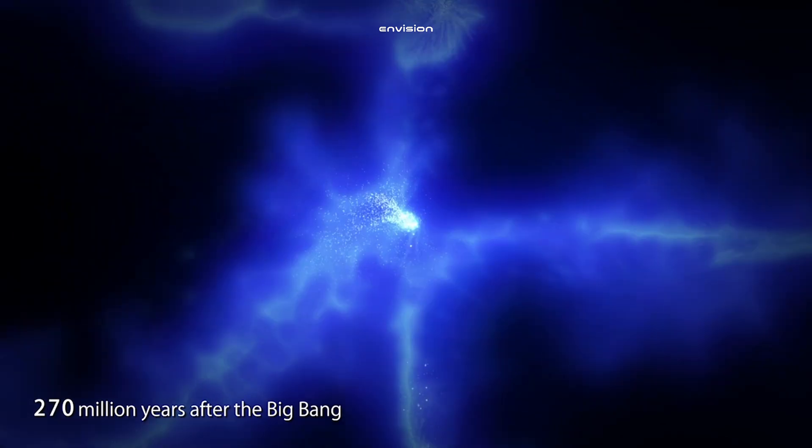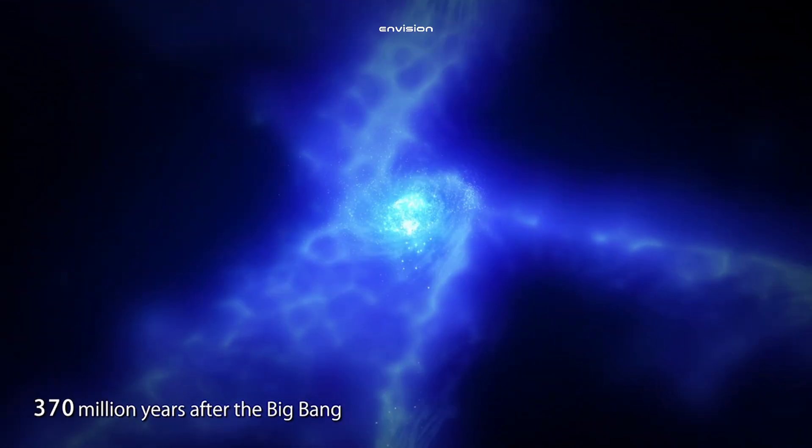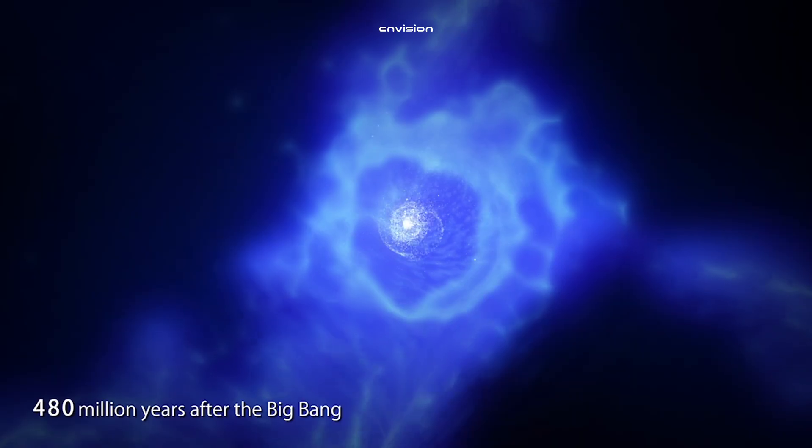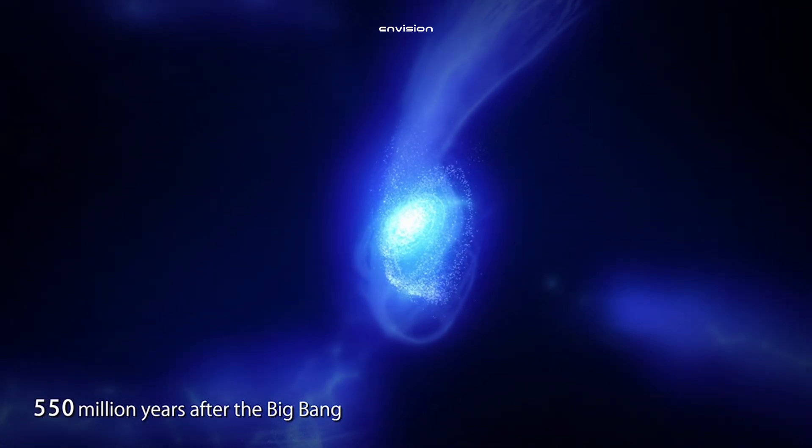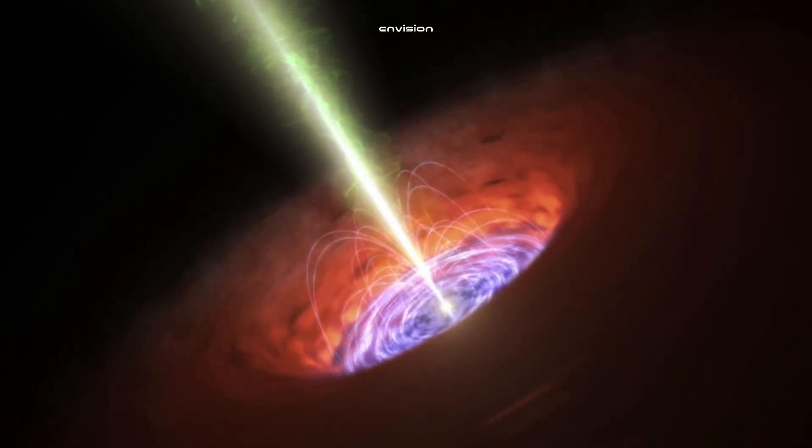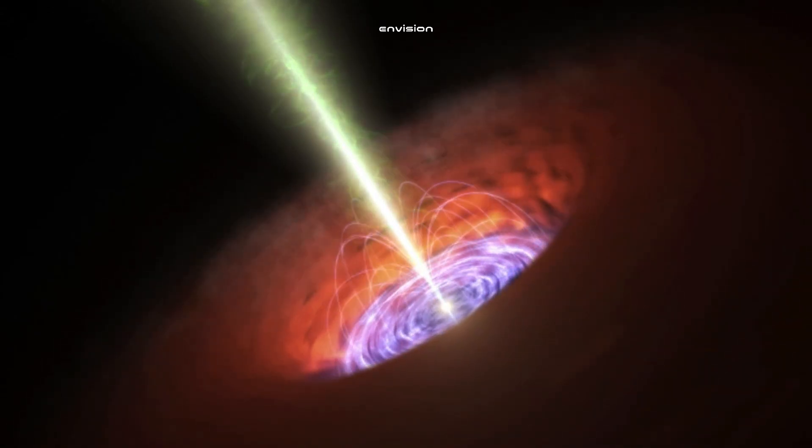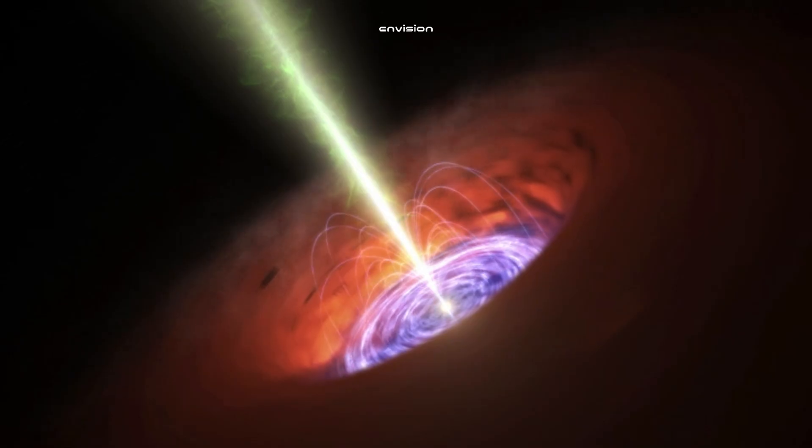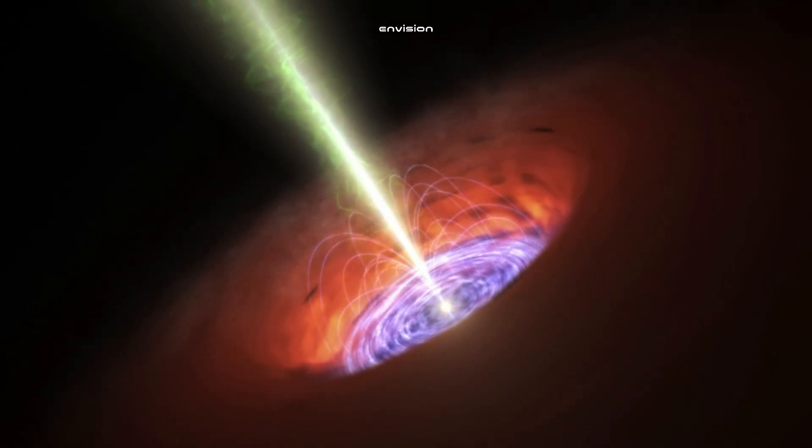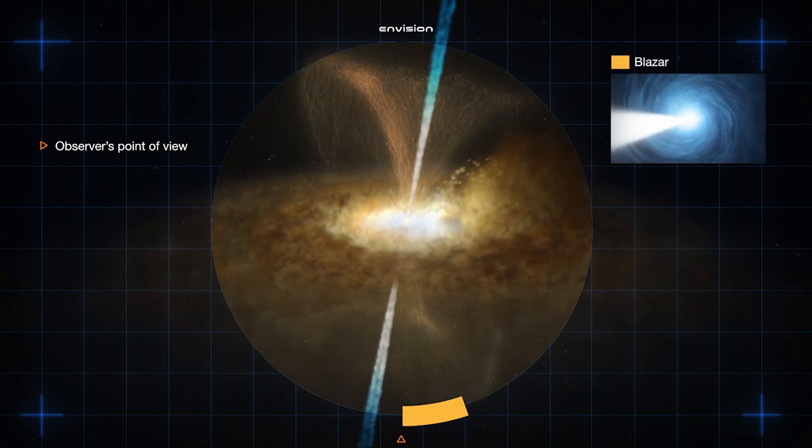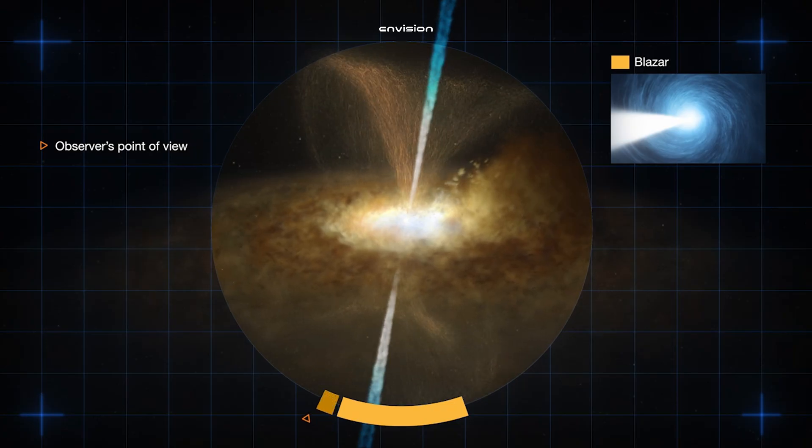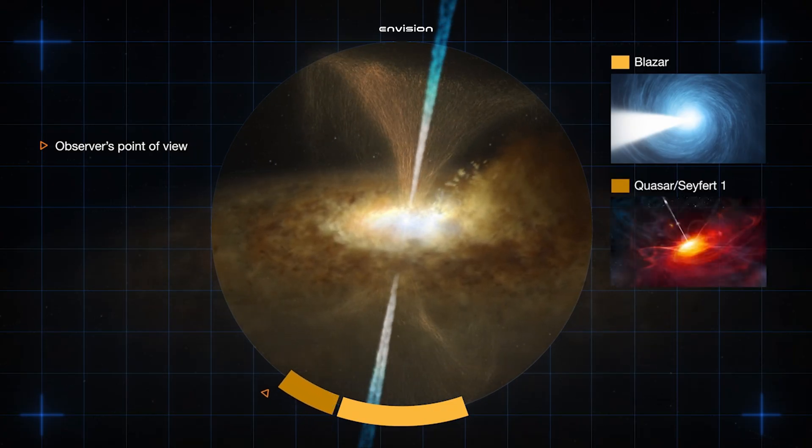Although we don't know what dark energy is, astronomers can measure it and whether it is changing by observing the acceleration of galaxies away from each other at different points in the history of the universe. Last year, when dark energy spectroscopy instrument researchers found hints that the force exerted by dark energy had changed over time, many scientists thought that it was a blip in the data which would go away. But after more than a year of observations, scientists have now confirmed that dark energy is actually behaving much more strangely than we thought.